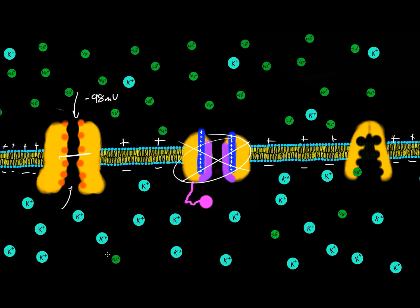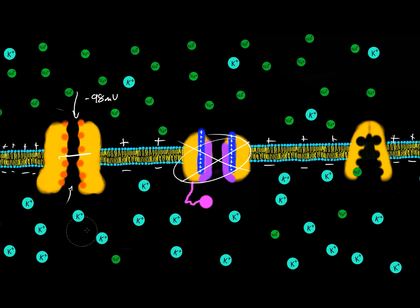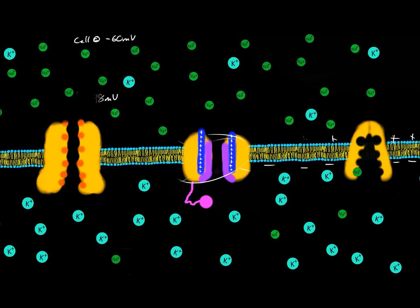It takes a negative 98 millivolts — given the potassium concentration of 400 millimoles per liter on the inside — to keep it from diffusing across the membrane to the lower concentration. But cells at rest have a voltage of about negative 60 millivolts. Why is it not negative 98? That's because the sodium channel is leaky — there are some sodium channels that open up just a little and a few sodium ions can cross.